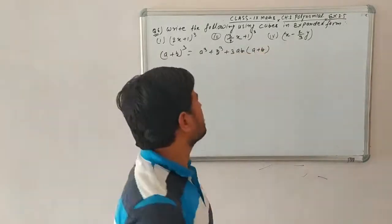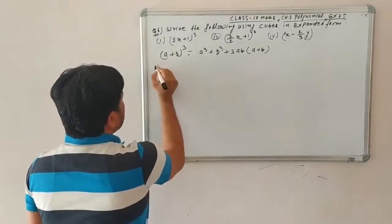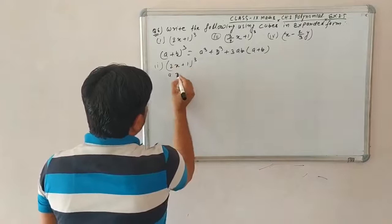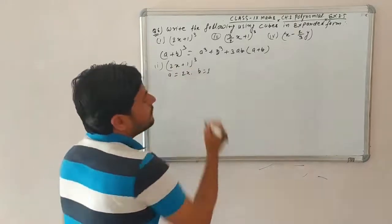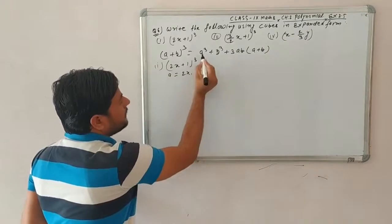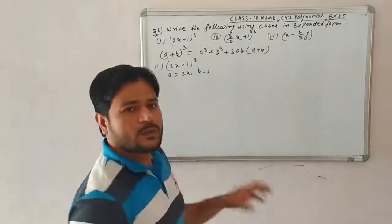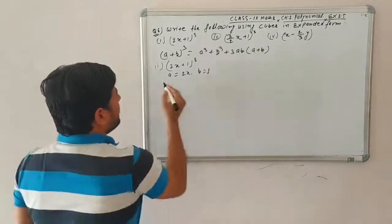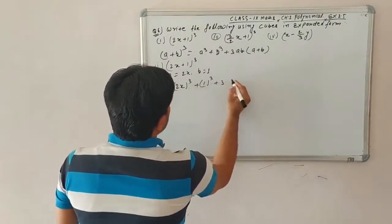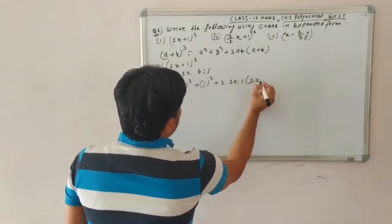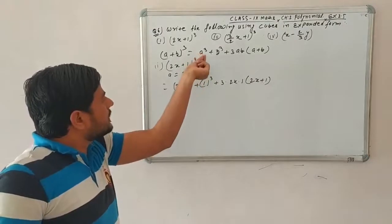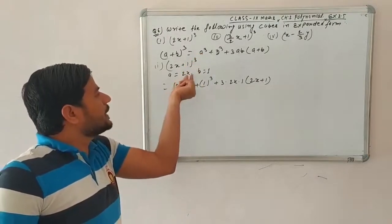This is the identity for cubes. In the first question you will see (2x + 1)³. So in the place of a we put a = 2x, and in the place of b we put b = 1. We will substitute these values into the identity: a³, b³, and 3ab(a+b).